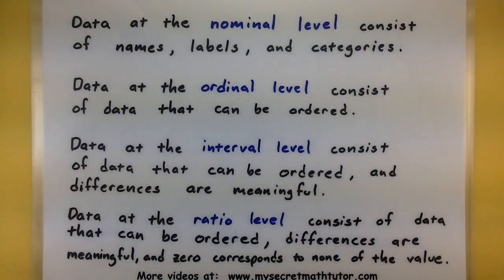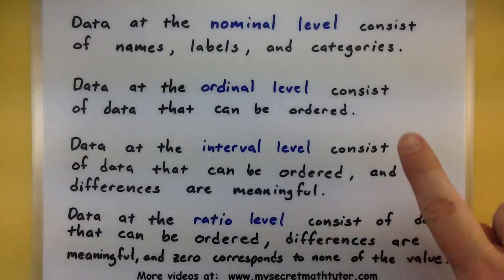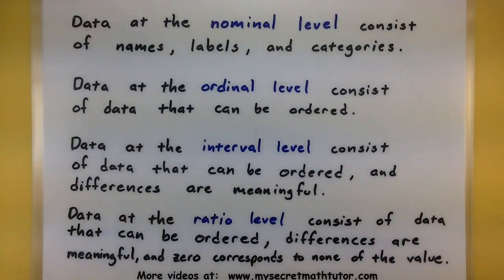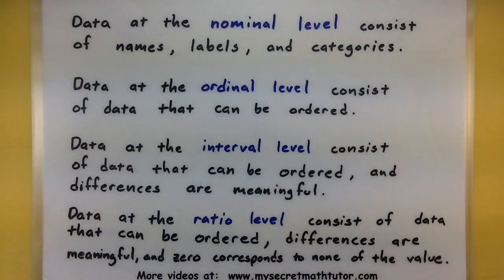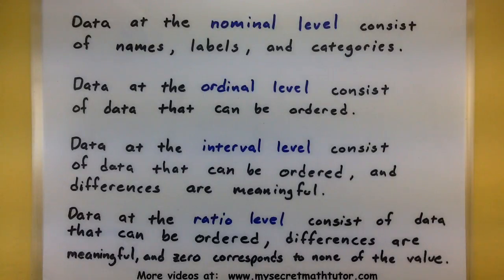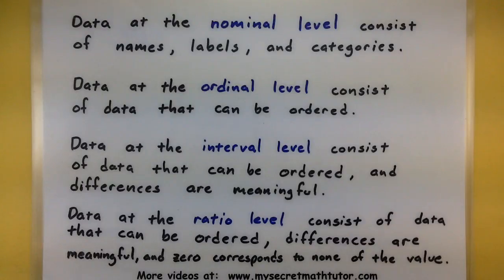Each of these different levels has different criteria on whether the data is measured at that level or not. Look closely at the characteristics the data has. At the nominal level, we're looking at data like names, labels, and categories. At the ordinal level, the data can be ordered — you can say which are lower or greater. The interval level takes that one step further: you can not only order the data but take differences and it actually means something. If I take two different data values and subtract them, the difference is meaningful, not arbitrary.